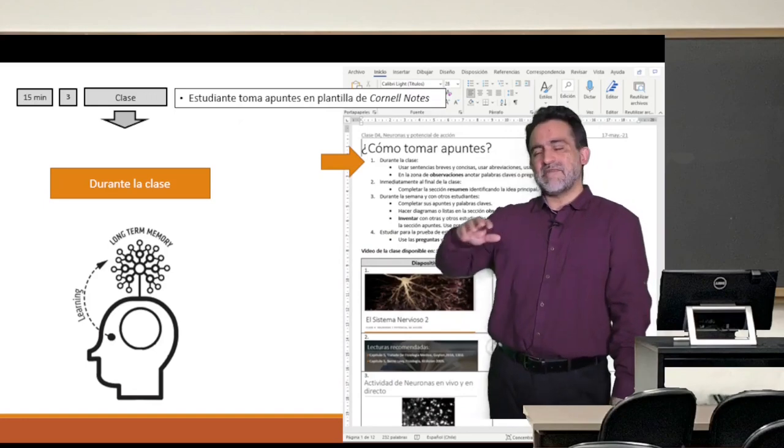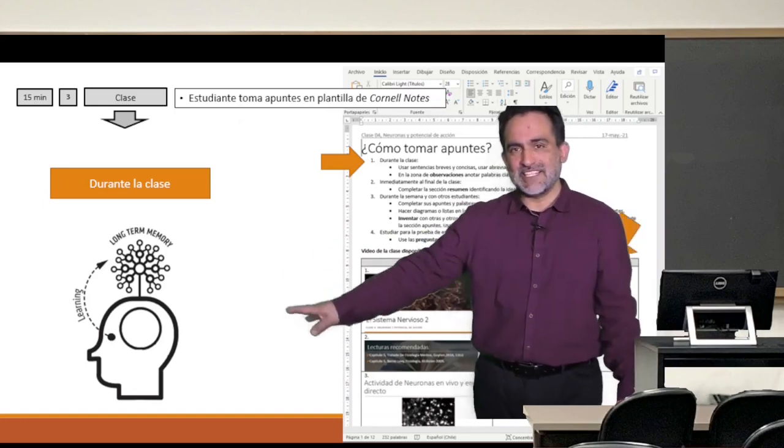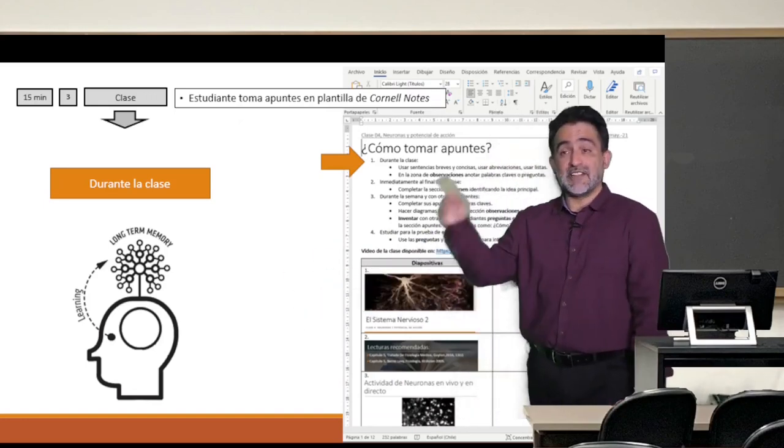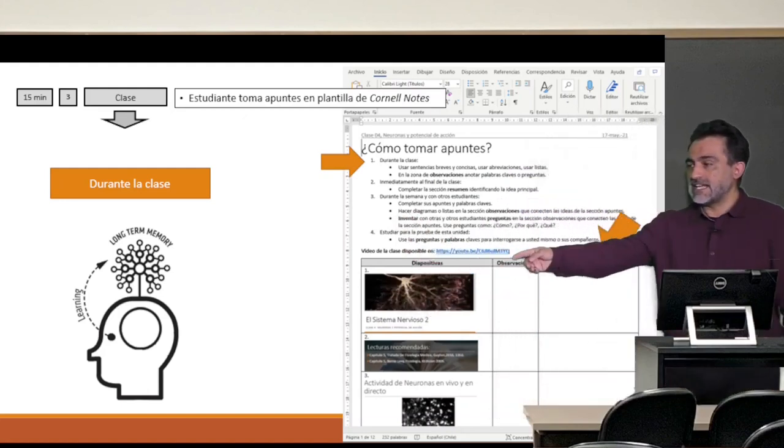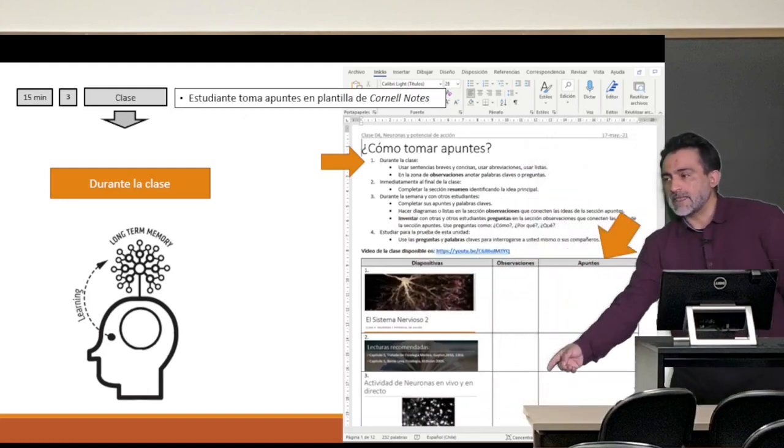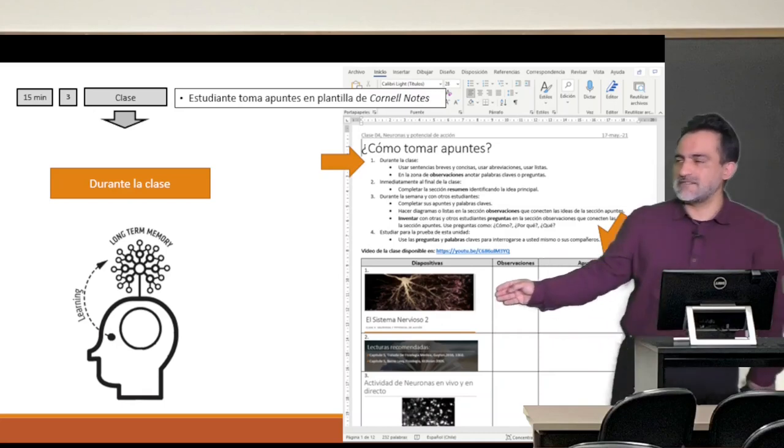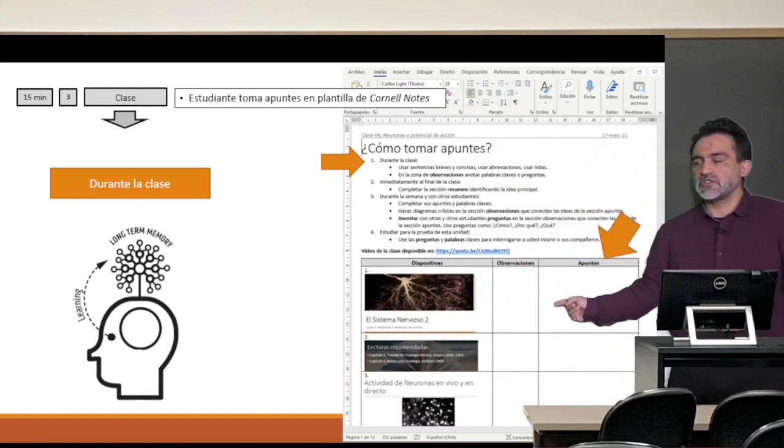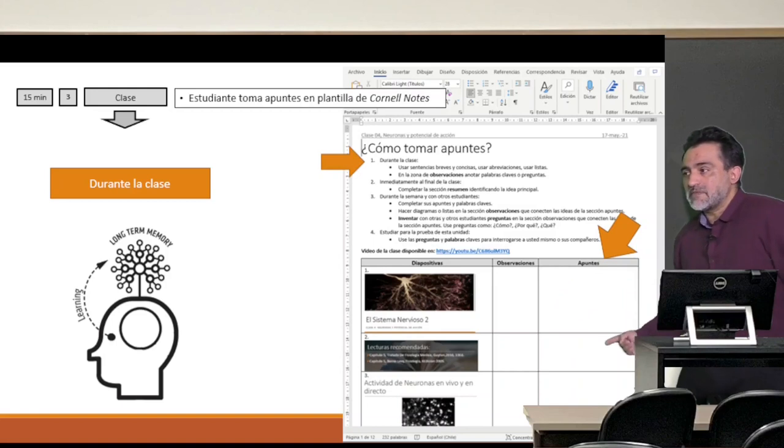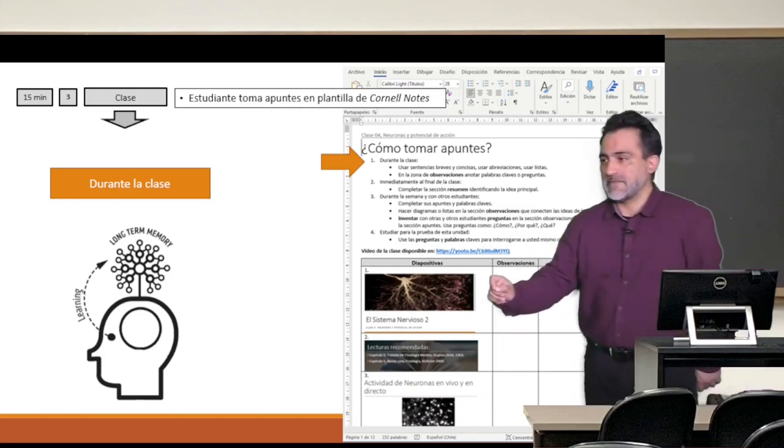Cornell Notes are something relatively old, like 30 or 40 years ago, but they're very useful now. I give them a Word document that has the following structure. It has the slides here, and has a column that says, I can't quite see, that says observations, where you put, for example, the keywords. And here comes the column of notes that you take.